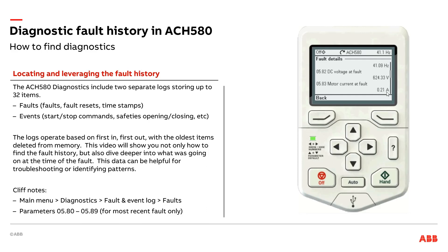I can see what the load of the drive was — my little demo case motor was only at 0.21 amps. Same thing with torque, only at three and a half percent because it's just a little demo. But in a traditional application, if I had an issue on the load side, maybe a bearing going out or something mechanical going on, you might see that current being a lot higher compared to the drive rating or the torque being a lot higher than it typically would be. So amps and torque will give you good guidance if there's a problem on the output side of the drive.